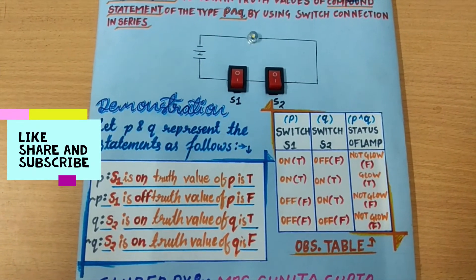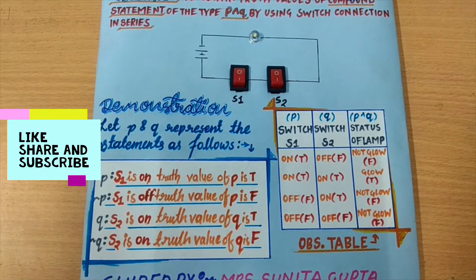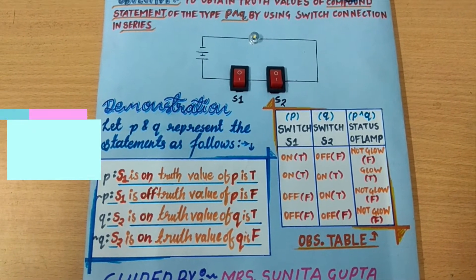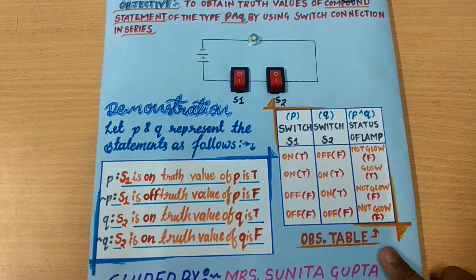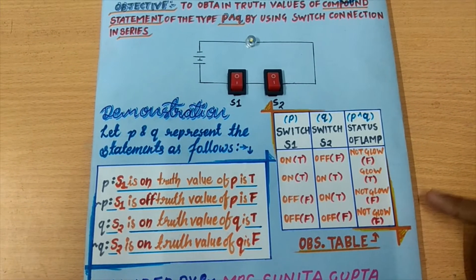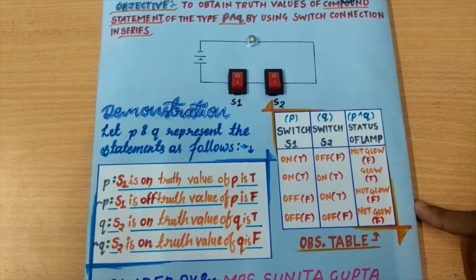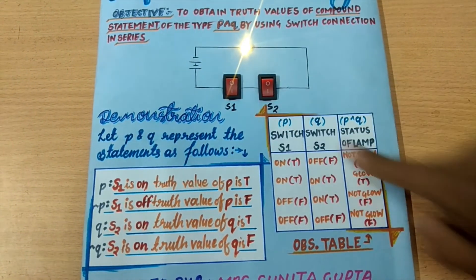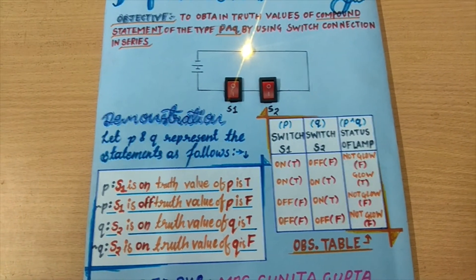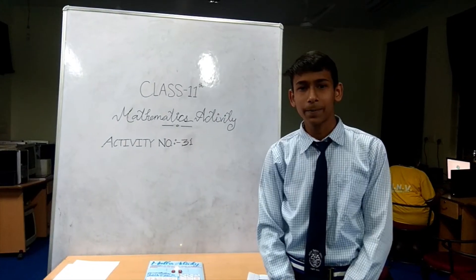Hence the observation shows that compound statement P and Q is true only if both of its component statements P and Q are true. So the bulb only glows when switch 1 and switch 2 both are on. Thank you.